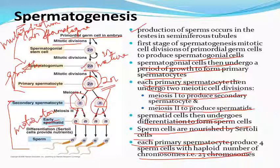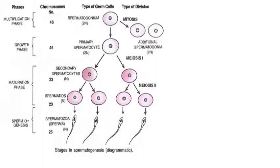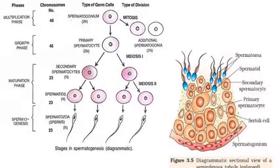Now let's see the typical structure of the sperms and how the cytoplasmic contents are equally divided into such a structure. This diagram shows the chromosome numbers, how they are being reduced, the type of germ cells involved, and the type of division each cell undergoes.